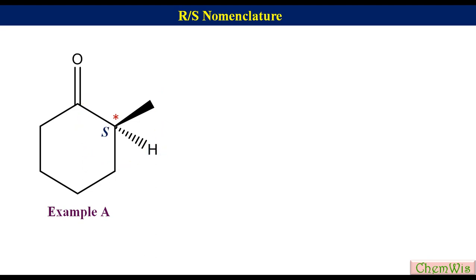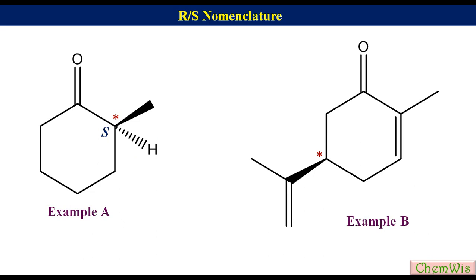Example B. In this molecule, the hatched wedge with the hydrogen is missing. So add the hatched wedge with the hydrogen. The fourth priority is on a hatched wedge, so there is no need for interchange of groups. Draw an arrow from 1 to 3 via 2. Since the direction of the arrow is clockwise, the absolute configuration will be R.